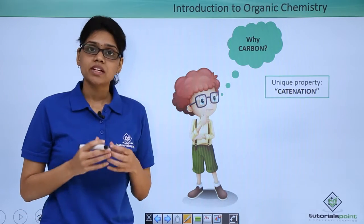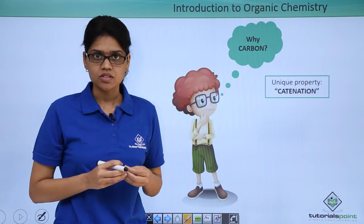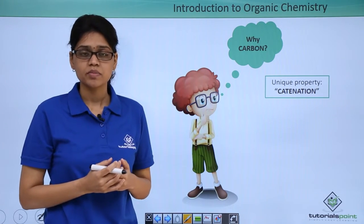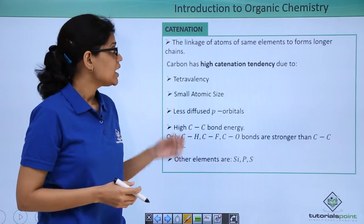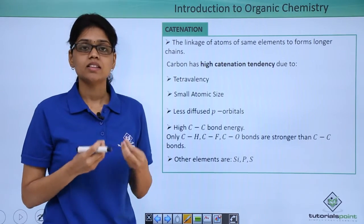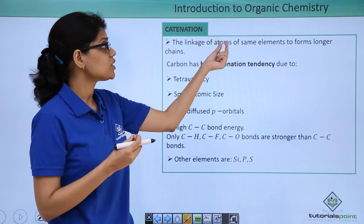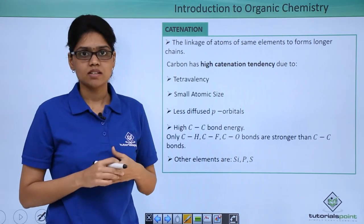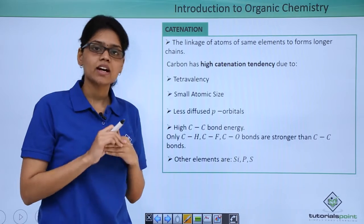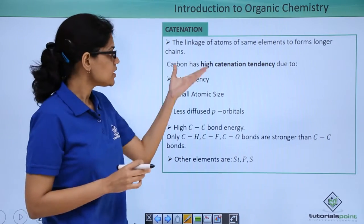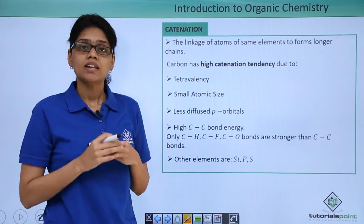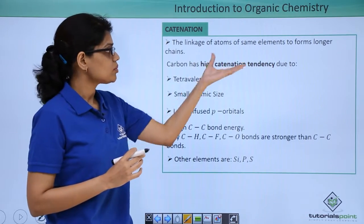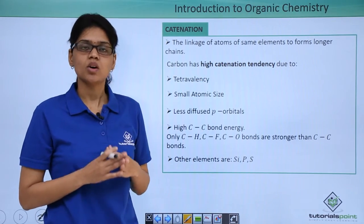Carbon has a very unique property called catenation, and this enables carbon to form a large number of compounds around us. What is catenation? Catenation is essentially the ability of same atoms of same elements to form links to form longer chains. Now carbon has very high catenation tendency due to a number of reasons. Let us examine each of these reasons and understand how it contributes to the high catenation tendency of carbon.